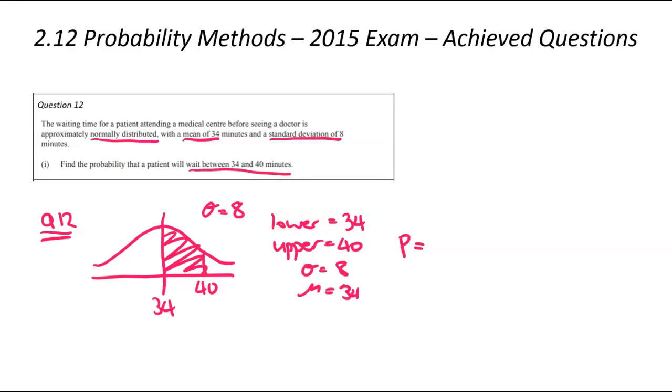We plug all of those into that distributions function of our calculator and I'm getting 0.2734, rounded to my usual 4 decimal places.